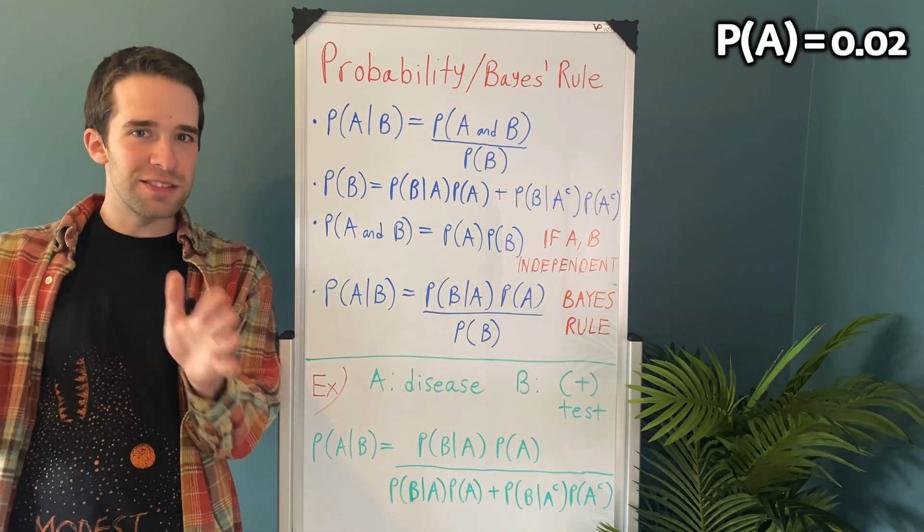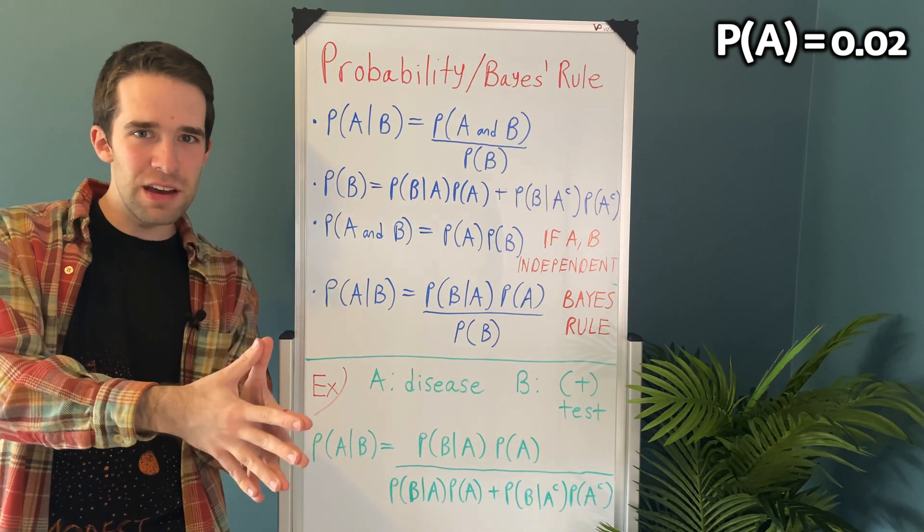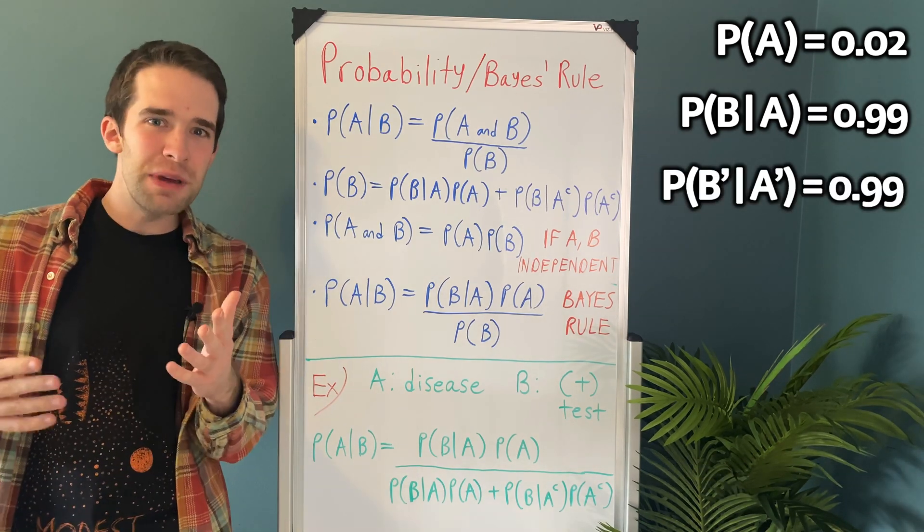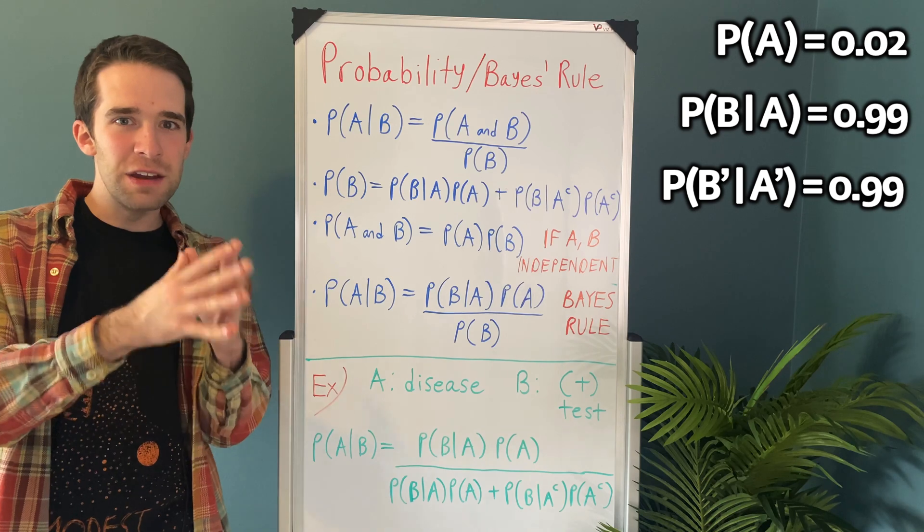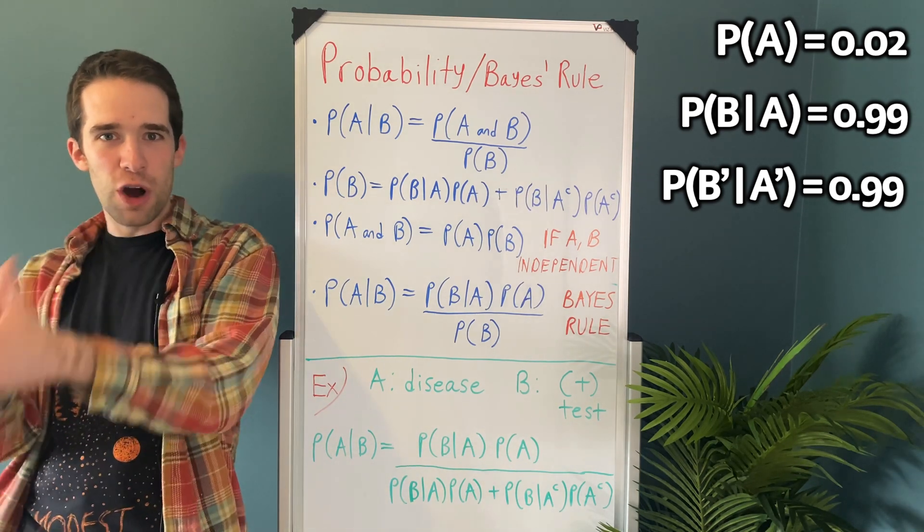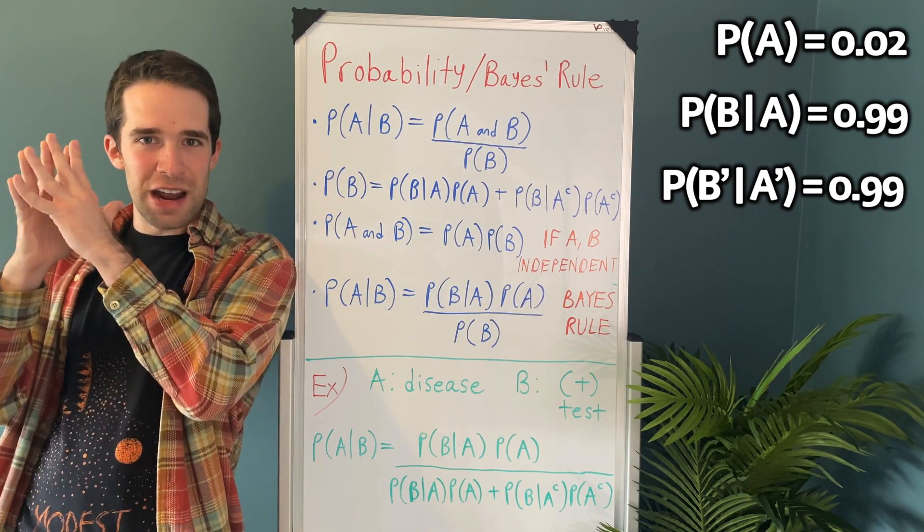Let's also say there's a test developed for it, and that test is 99% sensitive as well as 99% specific. So what that means is if you have the disease, there's a 99% chance you'll get a positive result from the test. If you don't have the disease, there's a 99% chance that you'll get a negative result.